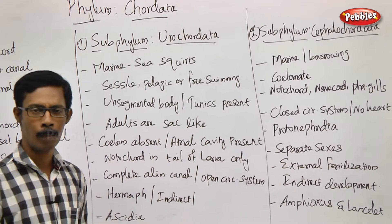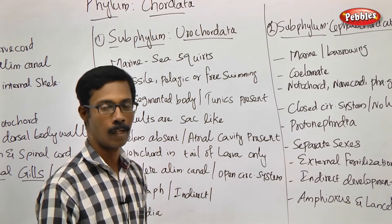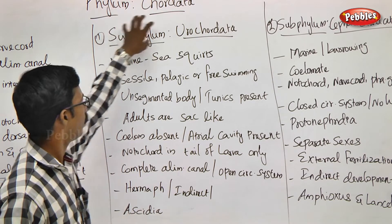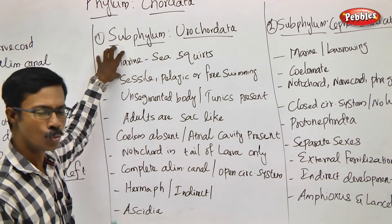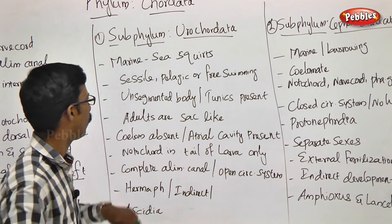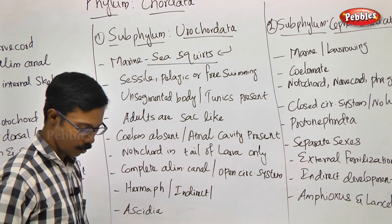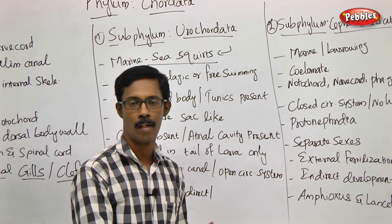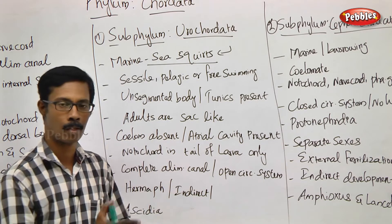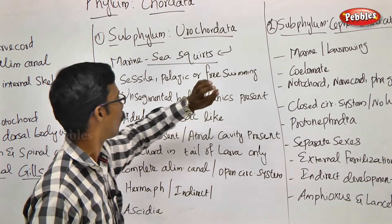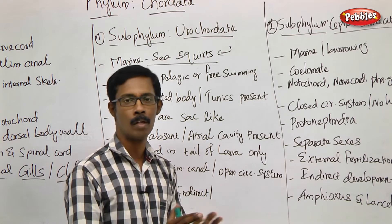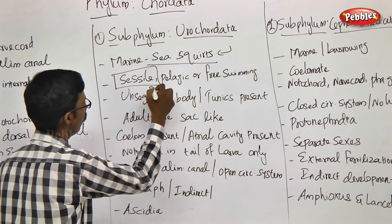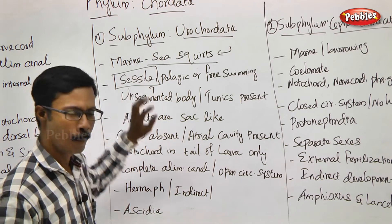Urochordata characters: we will talk about identification characters and classification on the basis of many characters. Most of them are marine. The common name is sea squirt. All Urochordata animals are commonly called sea squirts and they are normally sessile — meaning they are attached to a substrate. Rarely, some animals are free-swimming. Pelagic forms are frequently moving. But normally they are all called sessile animals.